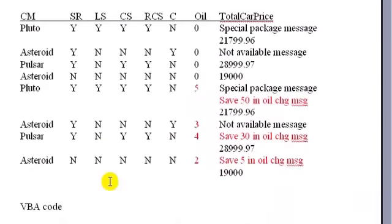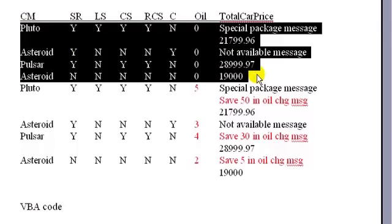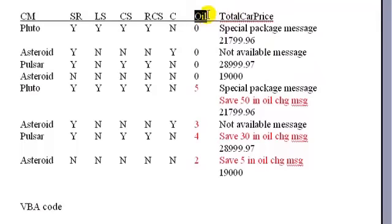The next thing we're going to look at is the test plan. The test plan we had before — the first four — we entered on the screen and they worked out fine. We did not have, however, a number of oil changes requested field coming in, but we do now. For the first four, I've made it zero, so these are going to be the same tests as before. It's important whenever you amend code to make sure what worked before still works and you haven't broken anything. We're also going to add four more as an example of a test.